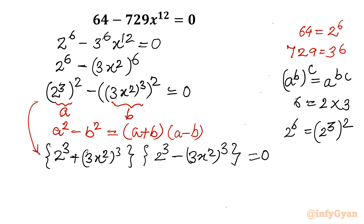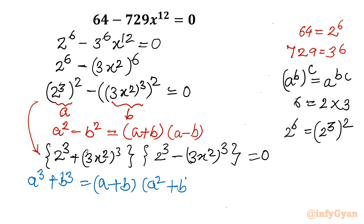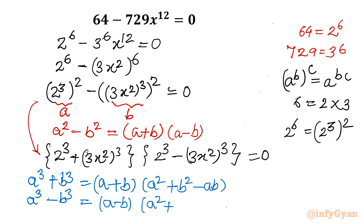Now I can apply the sum and difference of cubes identities. As we know, a³ + b³ = (a + b)(a² + b² − ab), and a³ − b³ = (a − b)(a² + b² + ab). I will apply a³ + b³ to the first bracket and a³ − b³ to the second bracket.